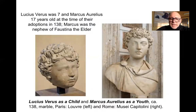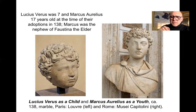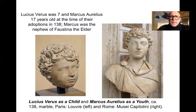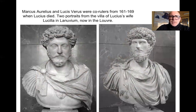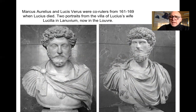Antoninus and Faustina had two sons. These are two wonderful portraits: the one on the left shows us Lucius Verus at the age of seven, and Marcus Aurelius as a youth — probably around 15 to 17 years — on the right. We know that at the time they ascended to the throne, Lucius Verus was 17 years old and his brother was seven. So roughly at this age, the two of them assumed the throne together. Here are two marvelous portraits showing them as adults — Marcus Aurelius on the left and Lucius Verus on the right.